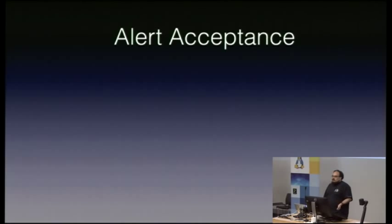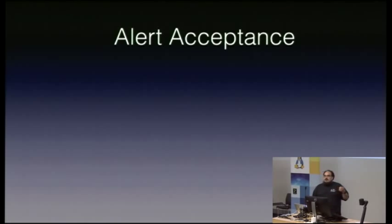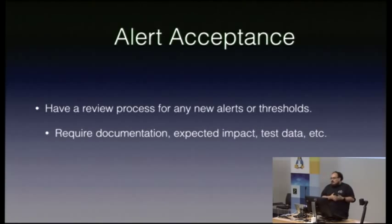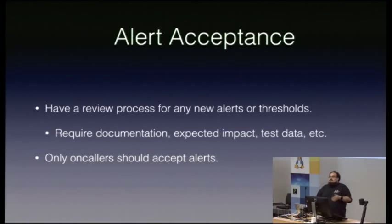Having an acceptance process for alerts is an extremely effective way to handle this if you have people who aren't on the team writing alerts. In a DevOps shop, if developers are writing alerts for you — if you've got separate operations and engineering teams — having a review process for your alerts and thresholds, requiring documentation, requiring those playbook pages to exist, is essential. And only people who are actually on-call should be accepting alerts.